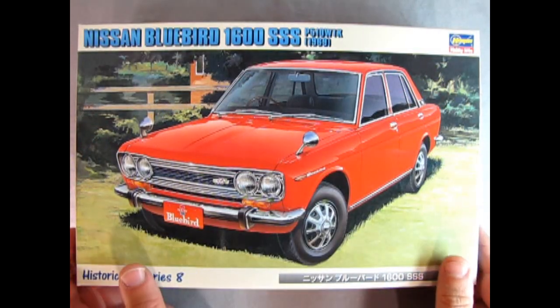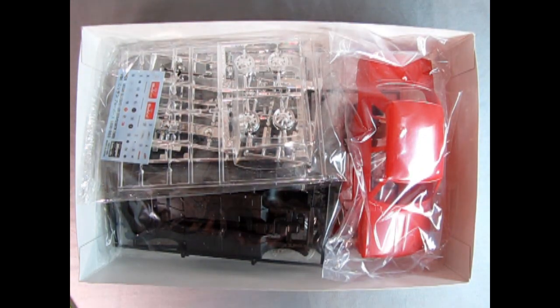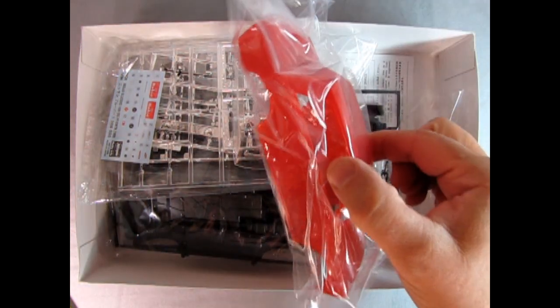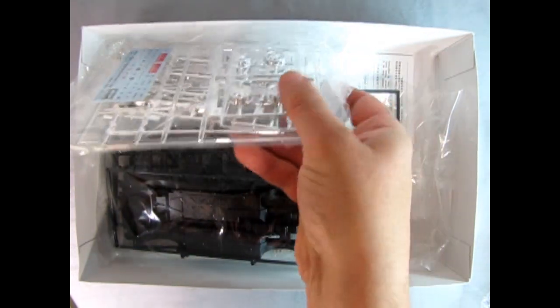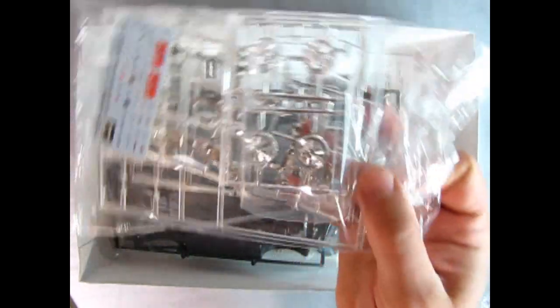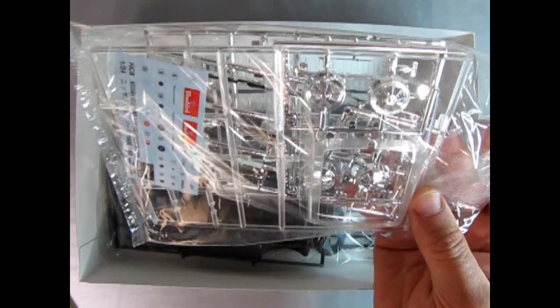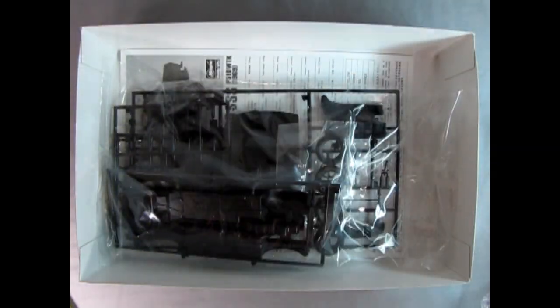So as we open the lid on our Nissan Bluebird we get to take a look at the great parts inside. Here we have the body molded in a red plastic which is a bit unfortunate. It would be nice if it was molded in white plastic. And then in this bag we've got our clear and chrome parts as well as the decal sheet.